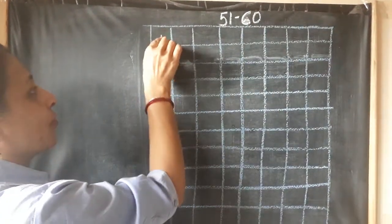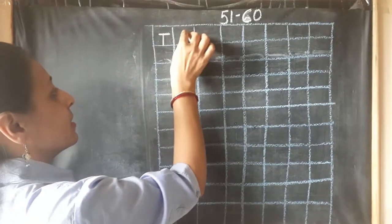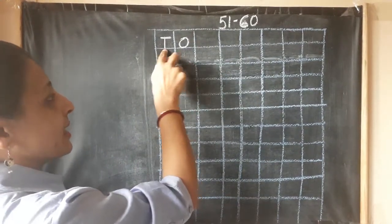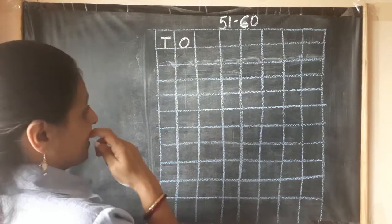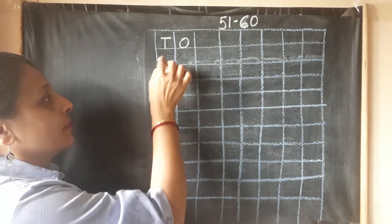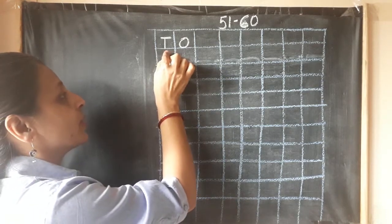Now, we always write numbers under T and O box. T represents tens, O represents ones. So now let's write 51 to 60. You are going to say numbers with me.